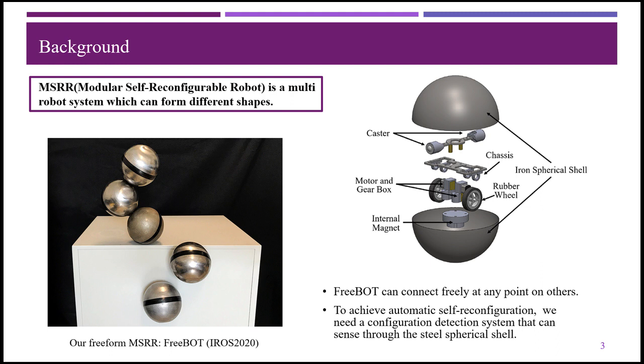The magnet inside the FreeBot provides a strong magnetic force, and the steel shell cannot block such a strong signal when the FreeBots are connected. A magnetic localization system has the potential to detect the FreeBot configuration accurately.